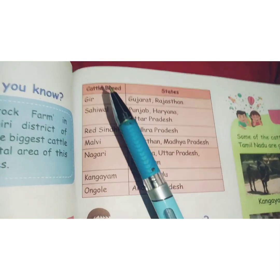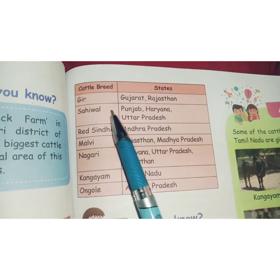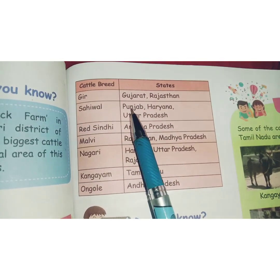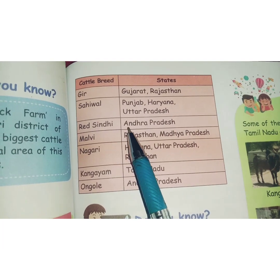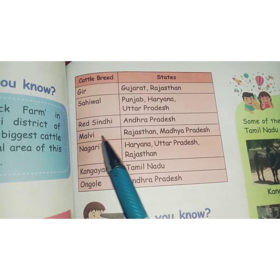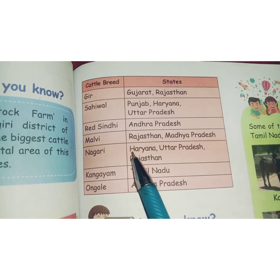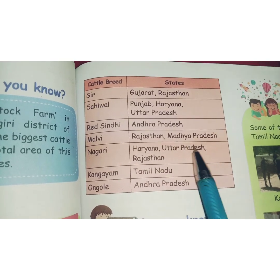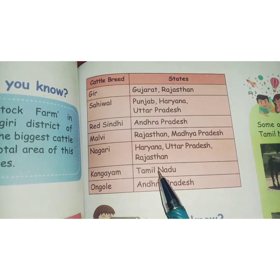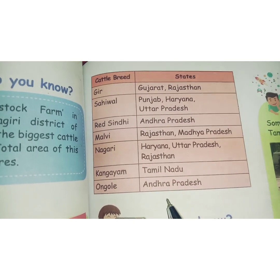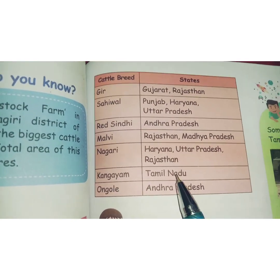The table explains cattle breeds and the states where they are found. Gir — Gujarat and Rajasthan. Sahiwal — Punjab, Haryana, Uttar Pradesh. Red Sindhi — Andhra Pradesh. Malvi — Rajasthan, Madhya Pradesh. Nagari — Haryana, Uttar Pradesh, Rajasthan. Kangayam — Tamil Nadu. Ongole — Andhra Pradesh. Kangayam is a famous variety from Tamil Nadu.